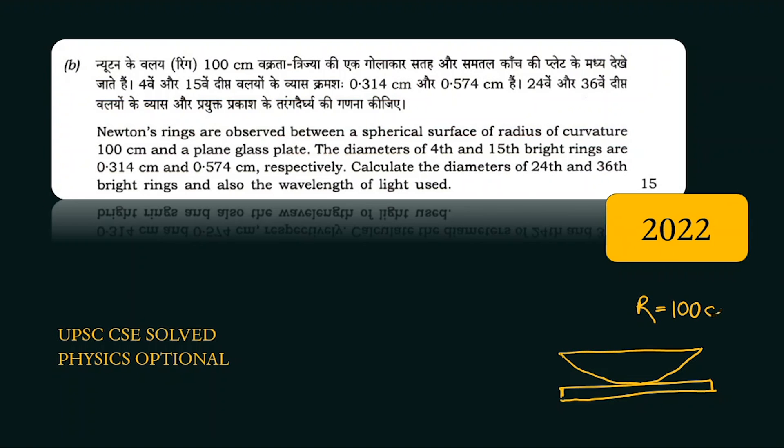Because of this air film there's interference due to which we are observing the Newton rings. We are given the diameters of fourth and fifteenth bright rings that are 0.314 and 0.574. Here we have to calculate the diameters for twenty-fourth and thirty-sixth rings and also the wavelength of the light used. Basically we have to find lambda, d24, and d36.